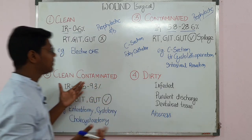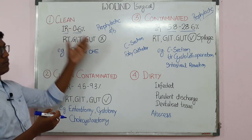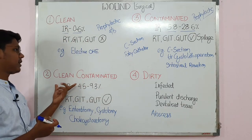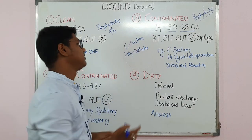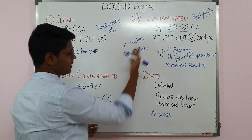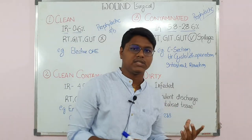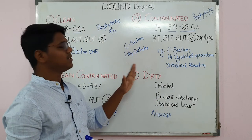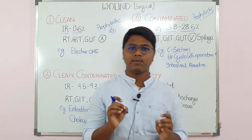So this is all about the surgical wounds. The four types to remember are: clean, clean contaminated, contaminated, and dirty. Remember there is nothing formally called surgical wound and traumatic wound — this classification is just for your better understanding.